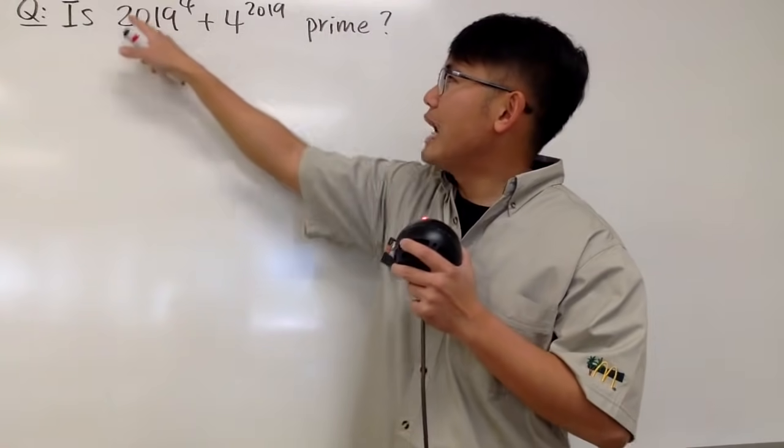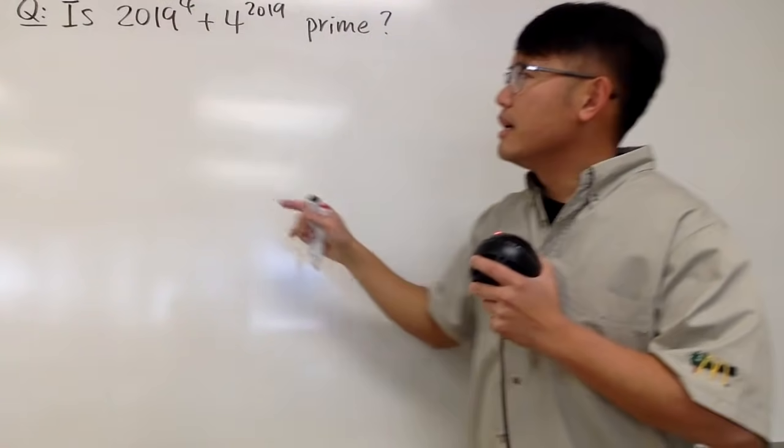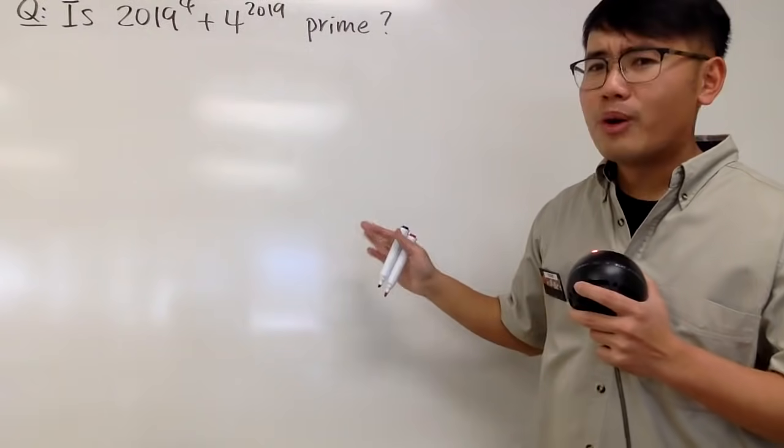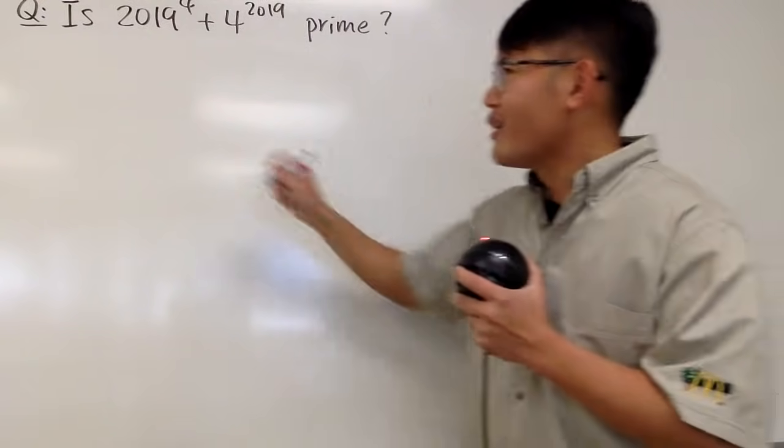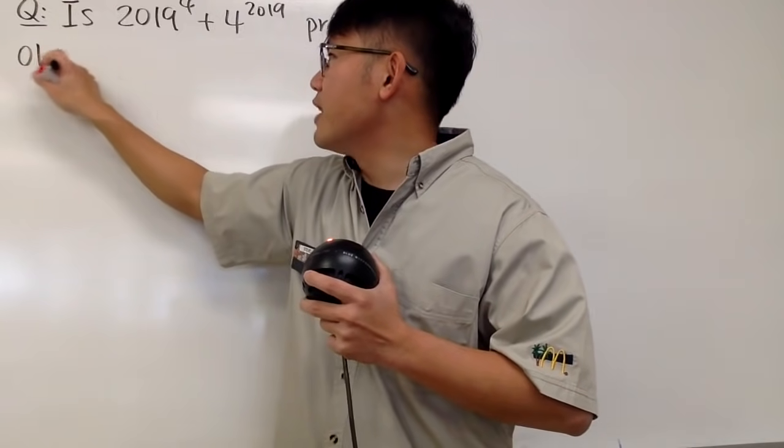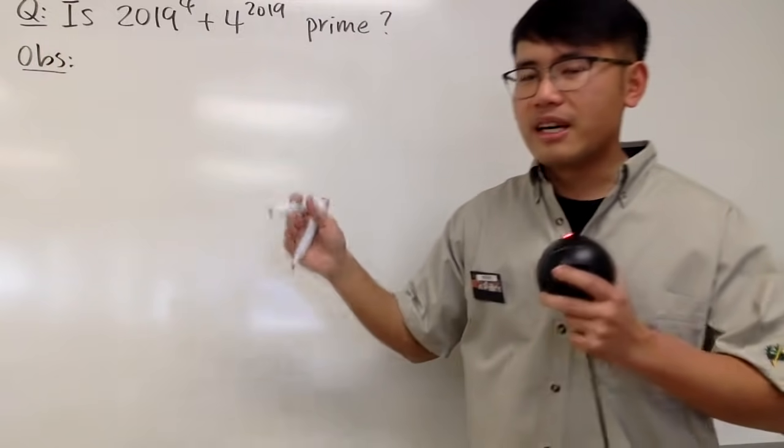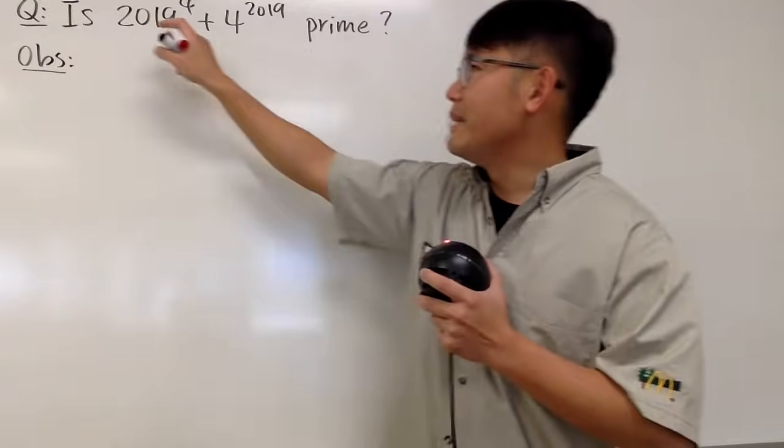And especially, we notice that we have this to the 4th power. When we have the 4th power, it's actually factorable for some of them, and let me show you how. So here we go. We will make some observations. We'll do some algebra and some exponents and all that.